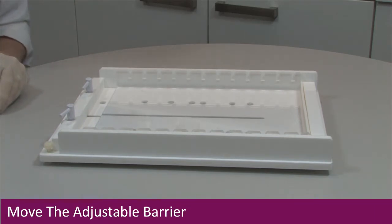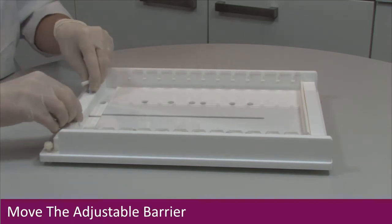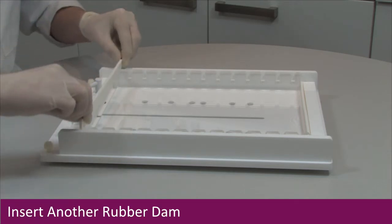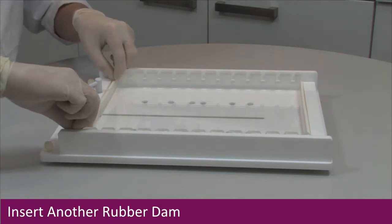Move the adjustable barrier along the central groove within the flexicaster so that it is close to the end of the gel tray before inserting the rubber dam between the tray and the barrier.